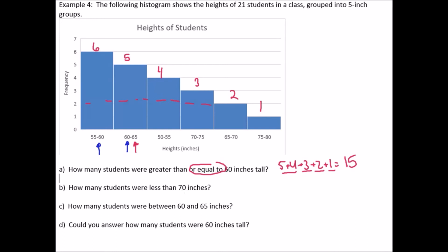So greater than or equal to. So we include this bar right here. Five, four, three, two, one, nine, 10, 11, 12, 13, 14, 15 students. How many students were less than 70 inches? So. You know what? I just noticed this. These intervals are not in order.